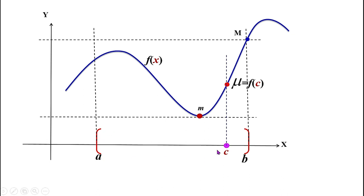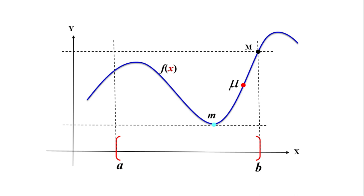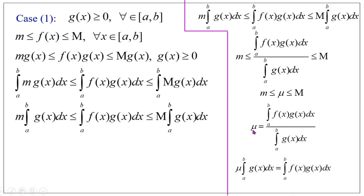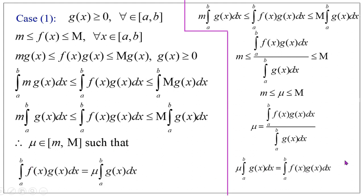So μ lies between the infimum m and supremum M of f on [a, b]. Therefore μ belongs to the closed interval [m, M] such that μ = f(c) for some c in [a, b]. Cross-multiplying, we get μ·∫[a to b] g(x) dx = ∫[a to b] f(x)g(x) dx. Thus μ in [m, M] satisfies ∫[a to b] f(x)g(x) dx = μ·∫[a to b] g(x) dx.